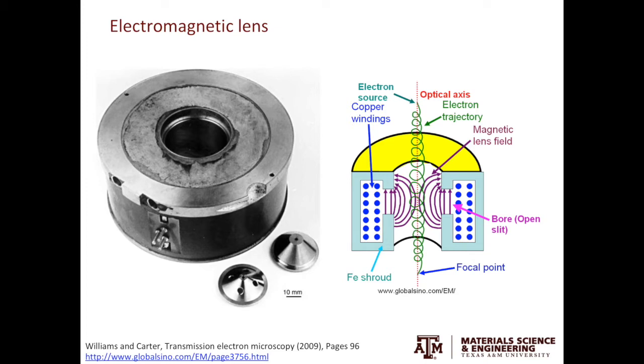The photograph on the left shows one example of the electromagnetic lens. The image on the right shows the schematic cross-section view of the electromagnetic lens. In the electromagnetic lens, you have copper wires going around. By passing a current through the copper wires, you will create a magnetic field.